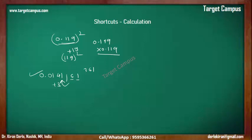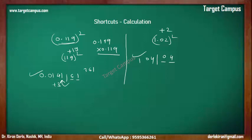Any combination works once you understand this trick. For example, 1.02 squared: forget the dot, this is plus 2. Plus 2 squared is 4 — but we write 2 digits here, so 04. And 102 plus 2 is 104. So the square of 1.02 is 1.0404. That's it — very easy.